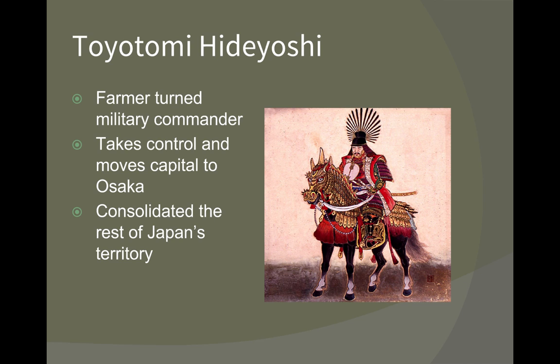His successor was Toyotomi Hideyoshi, who actually came from less noble blood. Nobunaga and Ieyasu were both from daimyo families, but Hideyoshi was a farmer who turned into a daimyo. Some people challenged his ability to be a ruler because of his humble background, but he ultimately proved himself to be a very worthy warrior. He became a very powerful daimyo who replaced Nobunaga, continued to expand territory, and when he died his lands basically made up all of modern Japan.